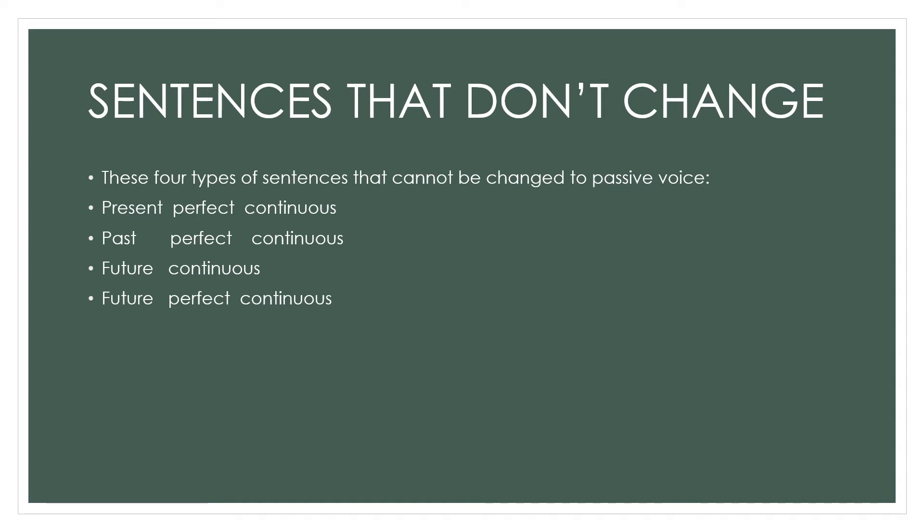There are some sentences that don't change when we convert from active to passive voice. There are twelve tenses, and out of these, four types of sentences cannot be changed to passive voice: present perfect continuous tense, past perfect continuous tense, future continuous tense, and future perfect continuous tense. You must remember these four.